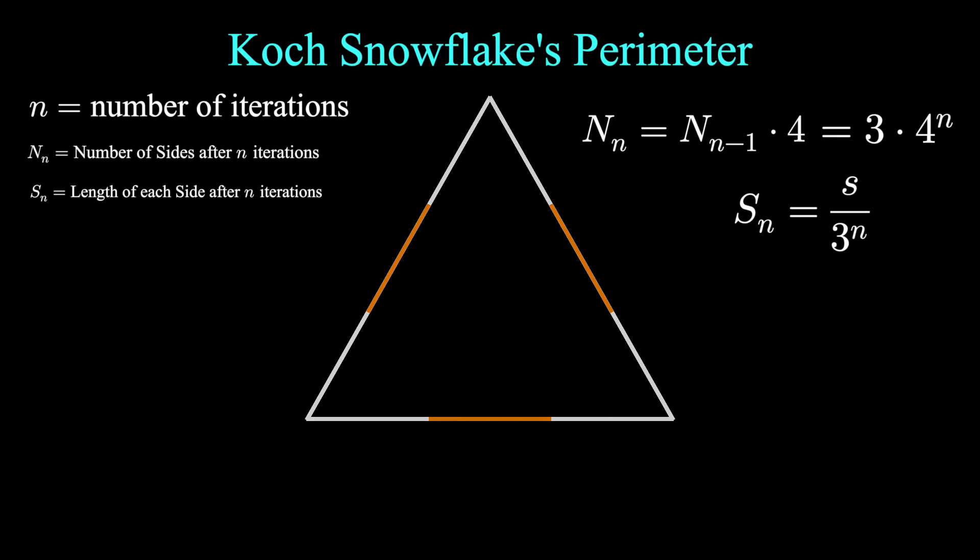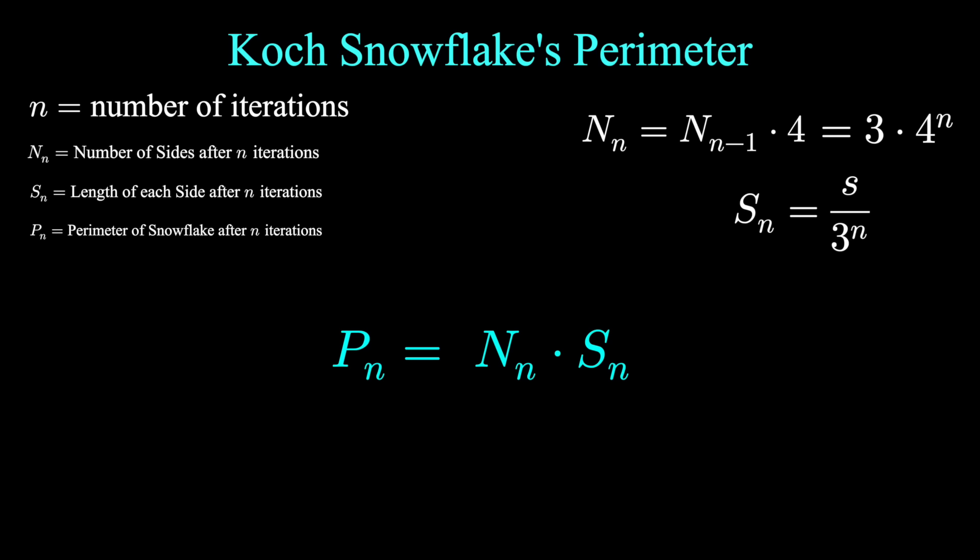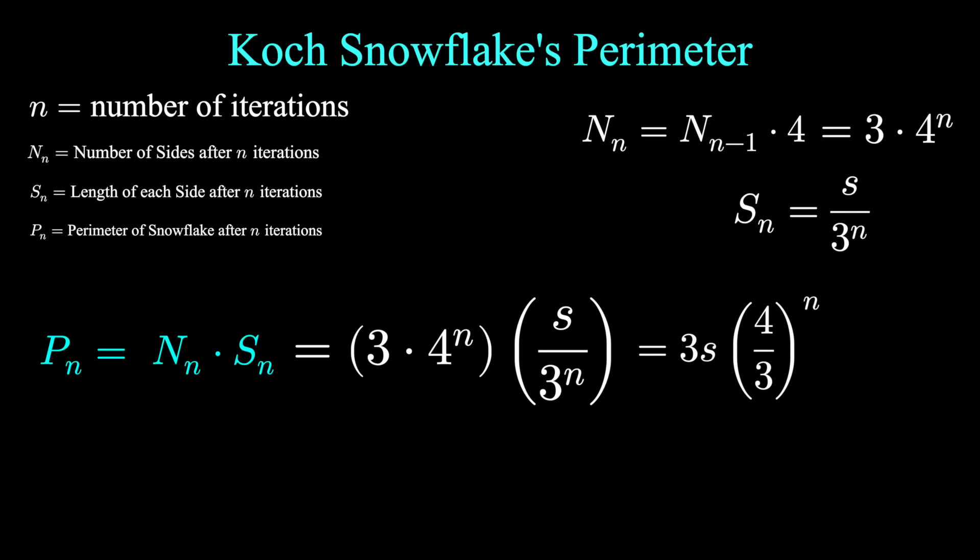Now we can find the perimeter. The perimeter of this shape, I'll call it P sub n, the perimeter after n iterations, should be the number of sides times the length of the sides. That's just three times four to the n, times s over three to the n. You could rewrite this with properties of exponents. Let's just call this three s times four thirds to the n. This is our perimeter after n iterations.